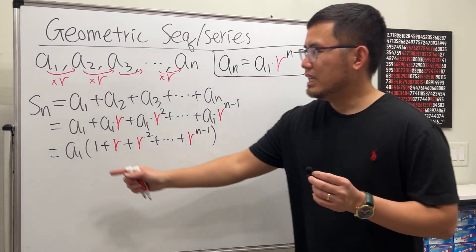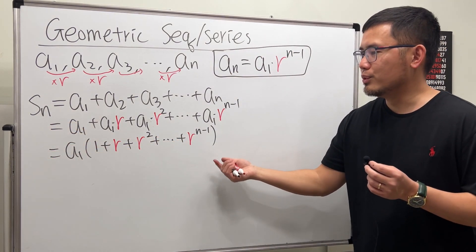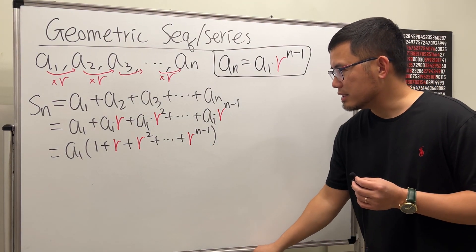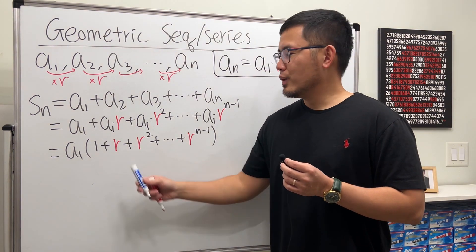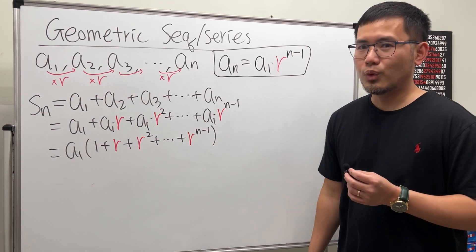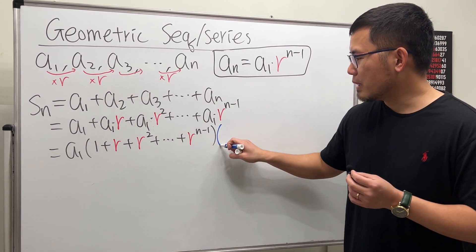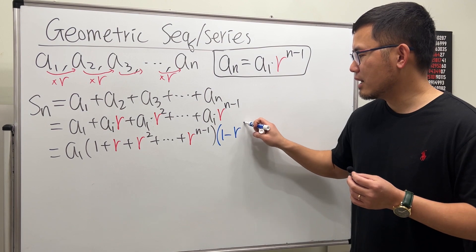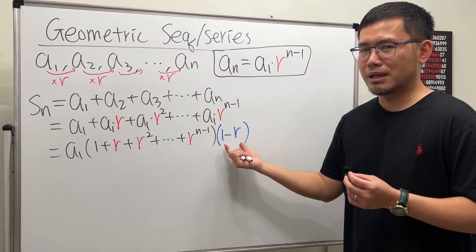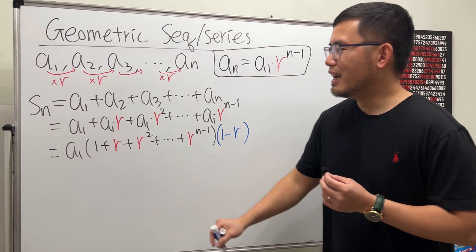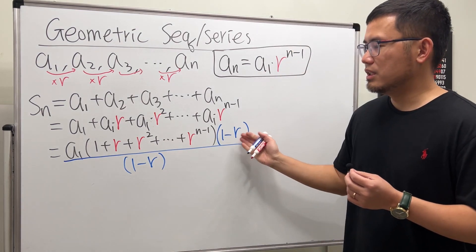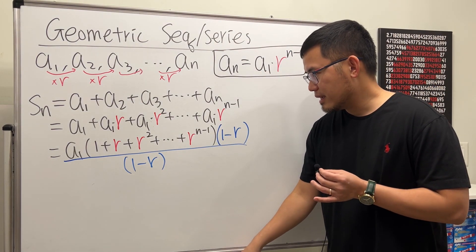But imagine if n equals 100, then in fact, you have to add like 100 terms inside. That's not good. But don't worry. Notice how beautiful this is: 1 plus r to the first plus r to the second and so on, up to r to the n minus one. Now, check this out. I am going to multiply this by 1 minus r, and you'll see a lot of things will cancel. But, of course, I cannot just multiply by this. Don't worry. I'm going to divide the whole thing by the same thing as well. So, this and that is 1, so they are still okay.